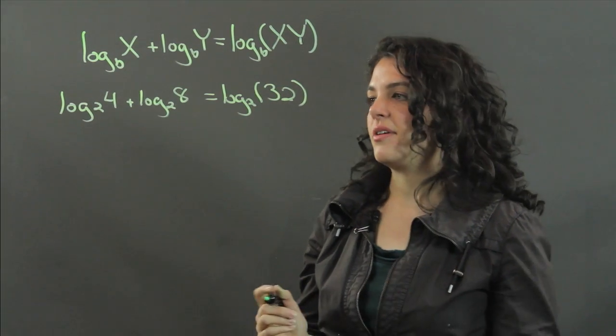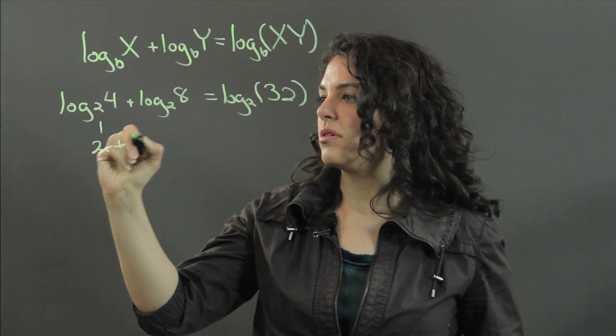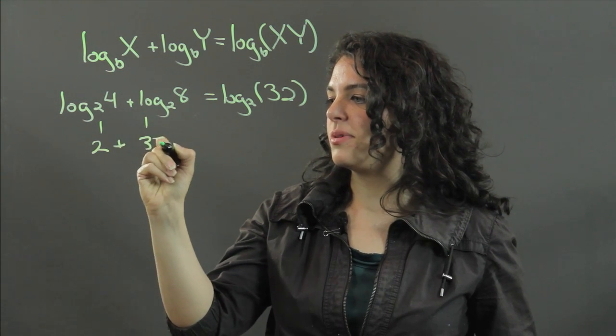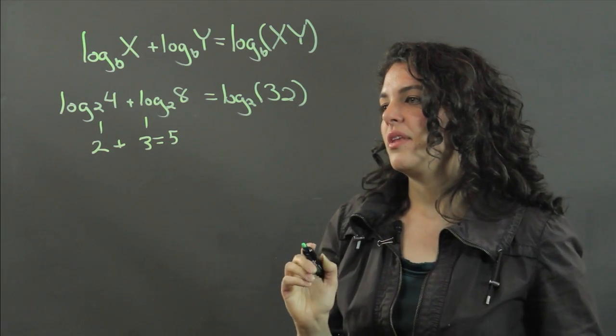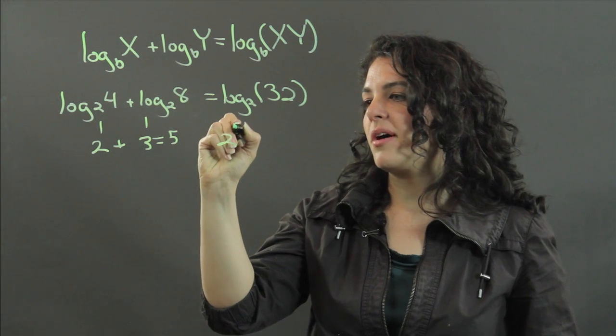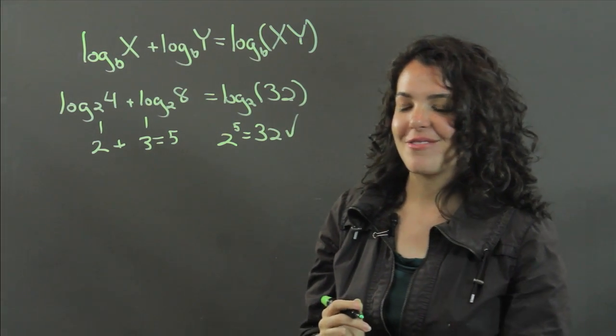And you can check this. Log base 2 of 4 is 2. Log base 2 of 8 is 3. 2 plus 3 equals 5. And when you look at this, 2 to the power of 5 does equal 32. So that rule checks out.